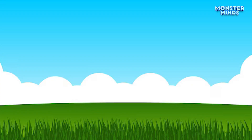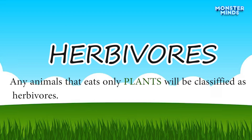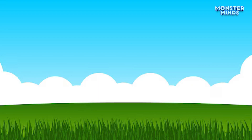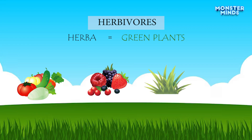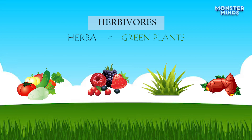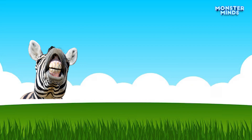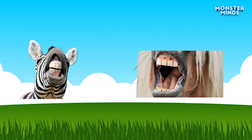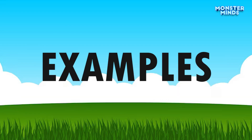Today we will discuss about herbivores. Any animals that eat only plants will be classified as herbivores. The name herbivores comes from the Latin word herba, meaning green plants, such as vegetables, fruits, grasses, and roots. They are also called plant eaters. Herbivores animals have strong and flat teeth that are made for grinding leaves and seeds. Let's look at some examples of herbivores.